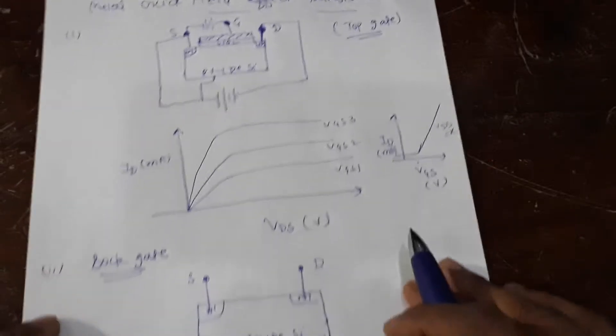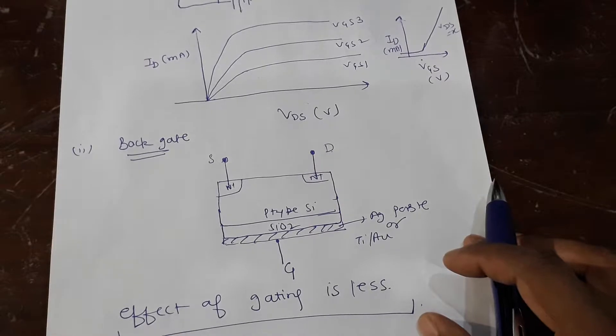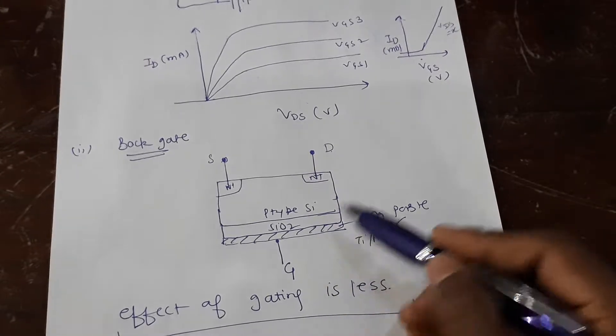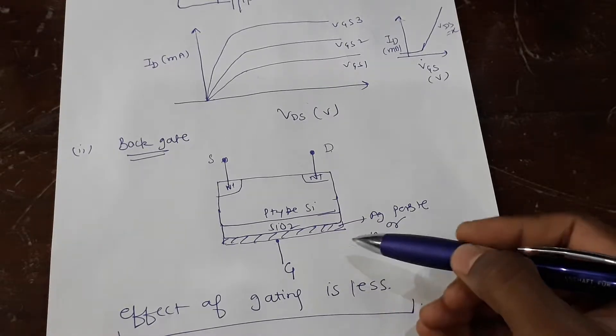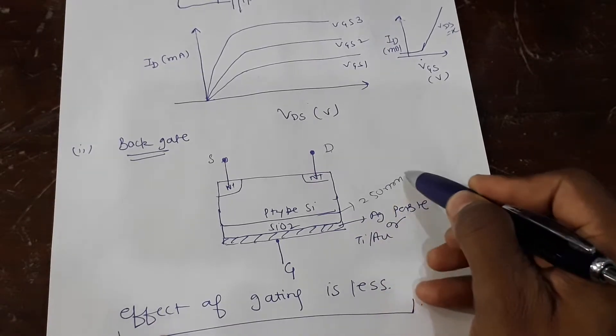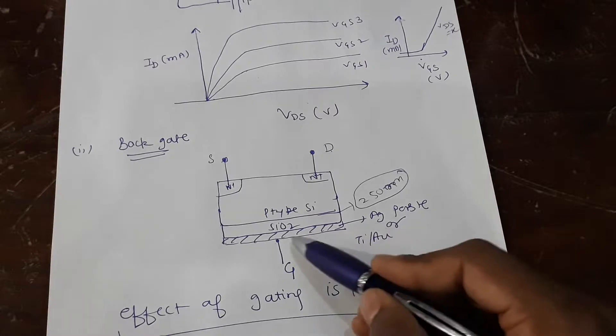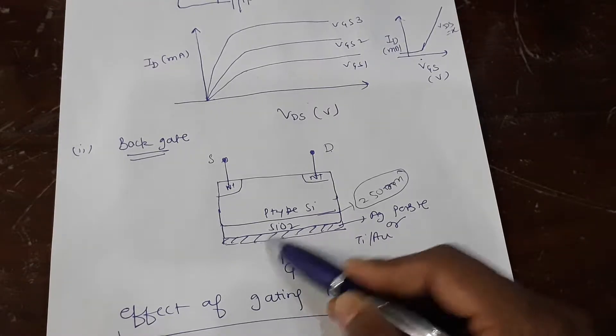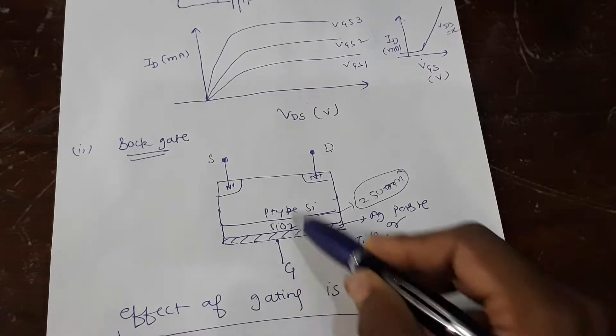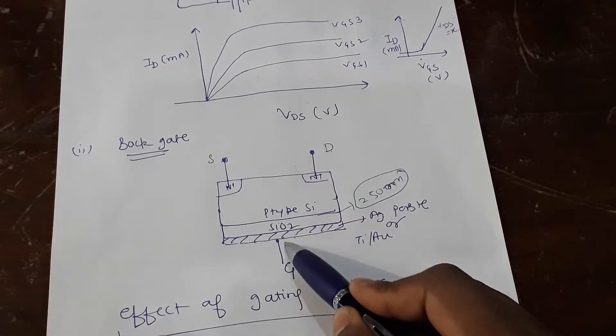Now, as an experimentalist, we always use, most of the time, back gate. In case of back gate, you have a special type of silicon wafer on the back side of which there is silicon dioxide deposited—250 nanometer normally is the thickness I have seen, but it comes in various thicknesses. On the back you put, instead of titanium-gold, you can put silver paste and you can just bias it. So instead of biasing through the top, we are doing the same effect with the gate on the backside.